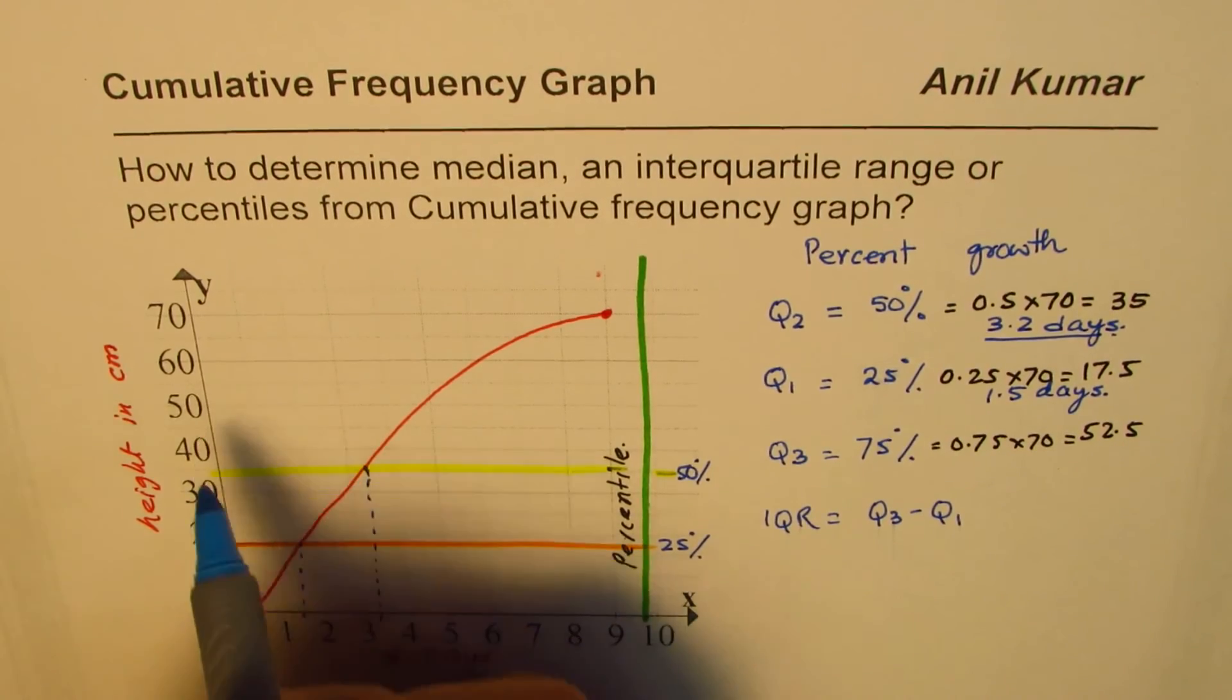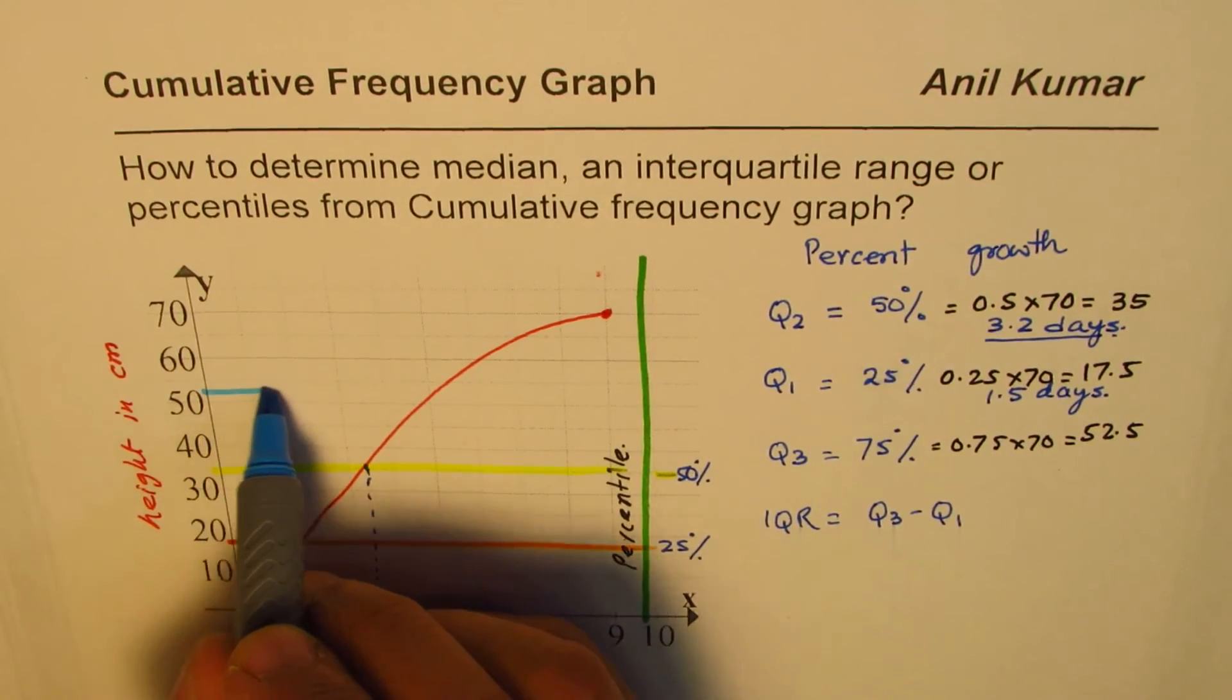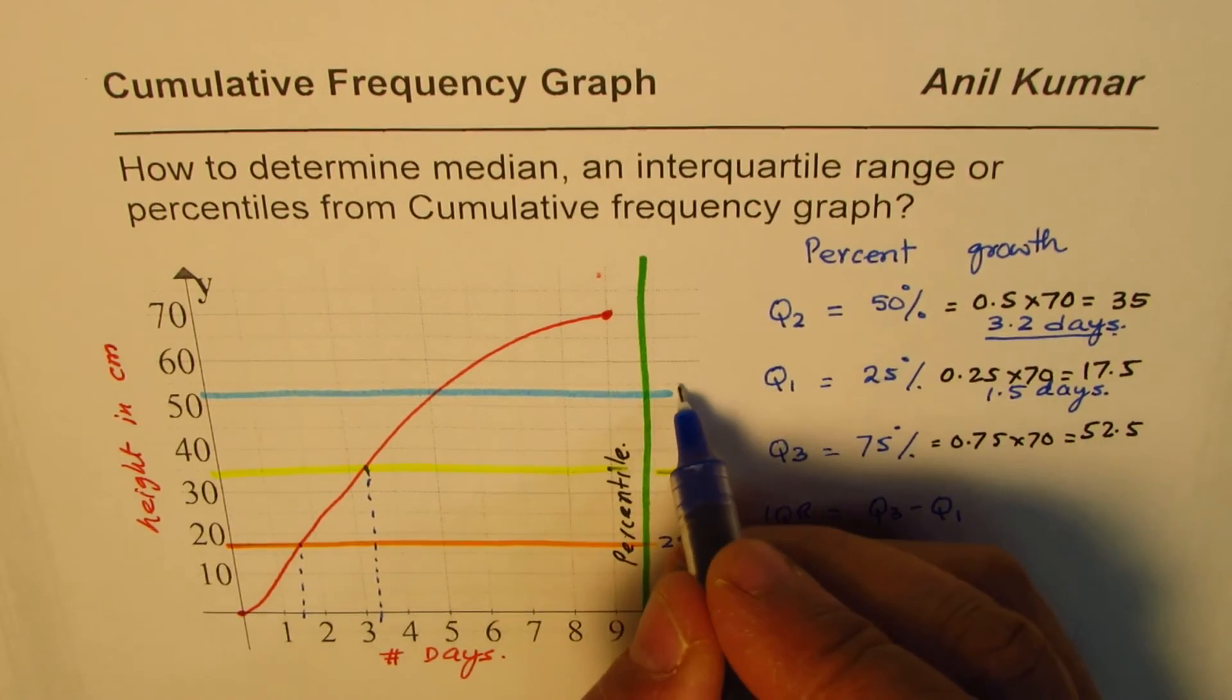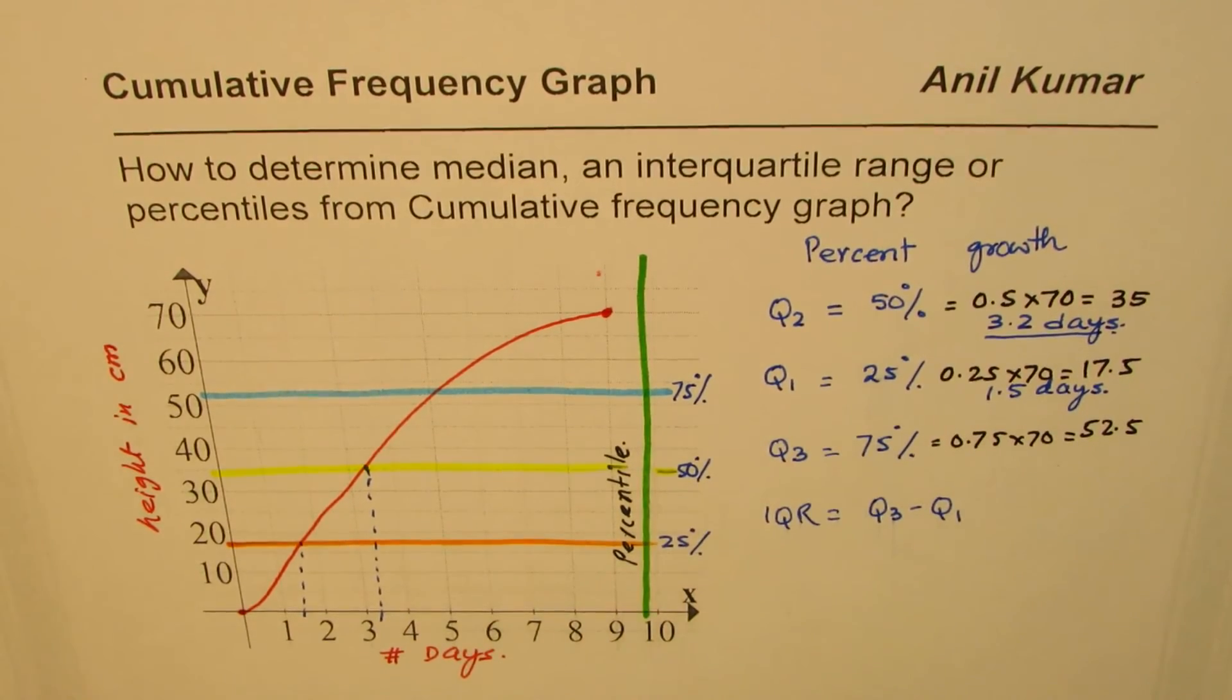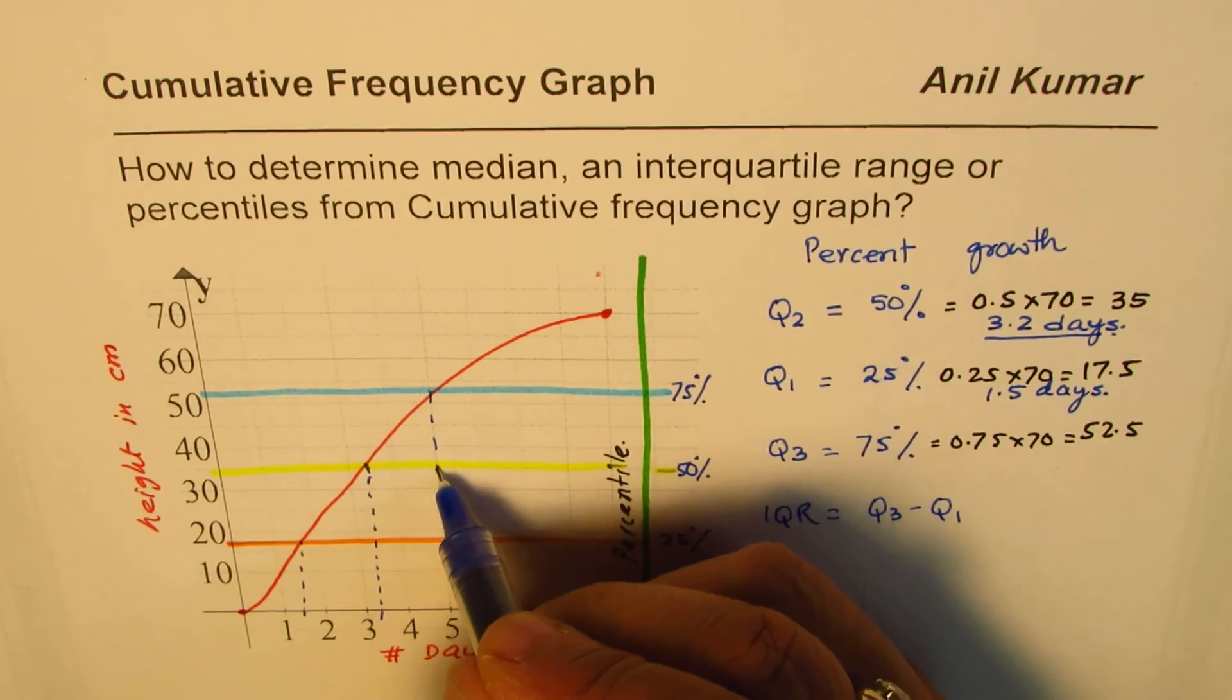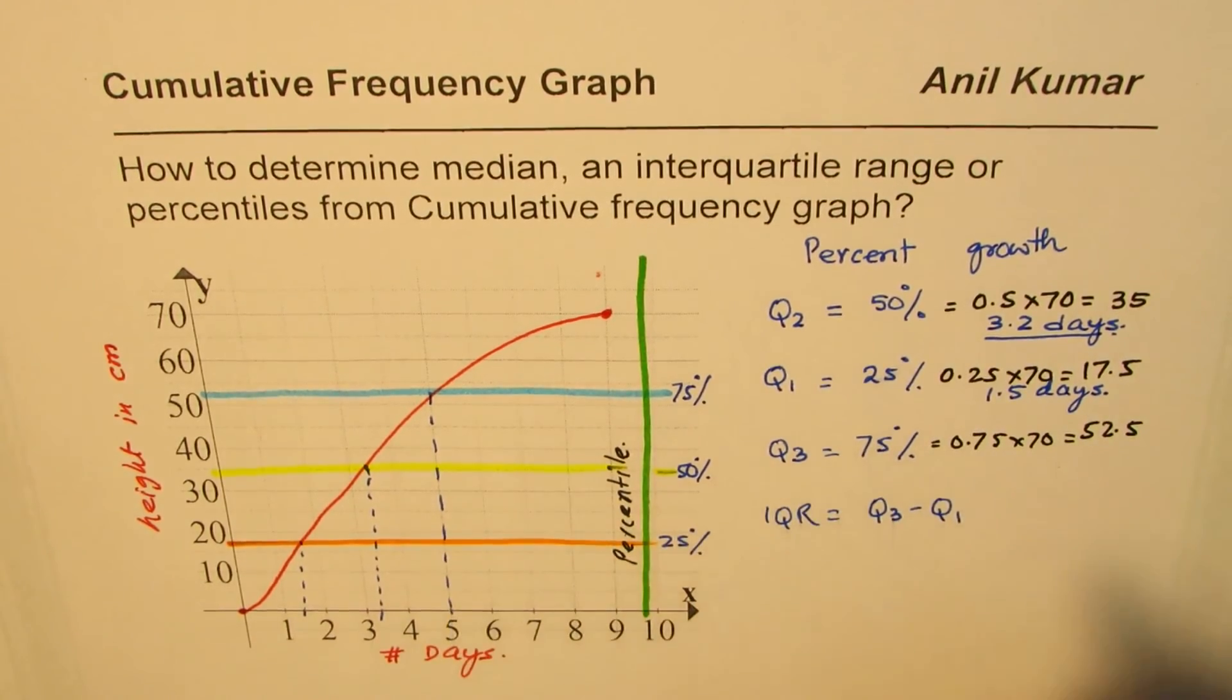Which is here midway between 50 and 55. So that represents the third quartile, so that is 75%. So that is the value which is let's say here five days.